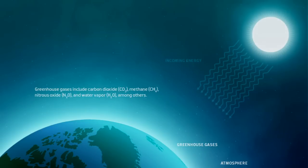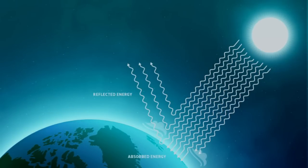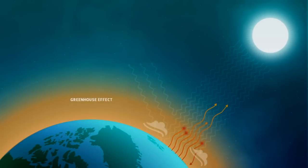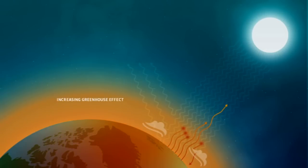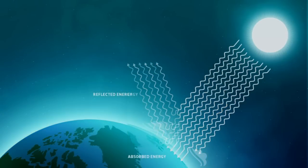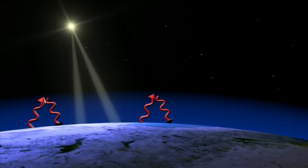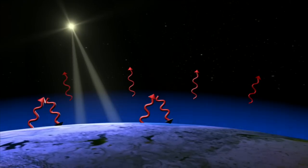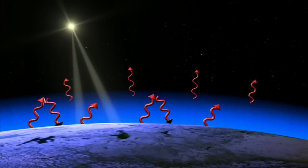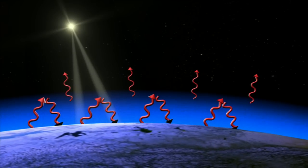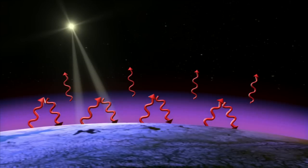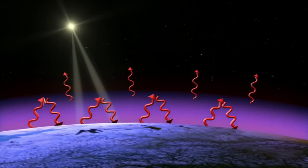Here's how the greenhouse effect works. As the Sun's energy hits Earth, some of it is reflected back to space, but most of it is absorbed by land and oceans. This absorbed energy is then radiated upward from the surface of Earth in the form of heat. In the absence of greenhouse gases, this heat would simply escape to space, and the planet's average surface temperature would be well below freezing. But greenhouse gases absorb and redirect some of this energy downward, keeping heat near the surface. As concentrations of heat-trapping greenhouse gases increase, Earth's natural greenhouse effect is amplified, like having a thicker blanket, and surface temperatures slowly rise.